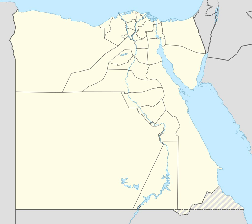Upper Egypt is the strip of land on both sides of the Nile that extends between Nubia and downriver to Lower Egypt. Upper Egypt is between the cataracts of the Nile above modern-day Aswan, downriver to the area of El-Lisht, which places modern-day Cairo in Lower Egypt. The northern part of Upper Egypt, between Sohag and El-Lisht, is also known as Middle Egypt.